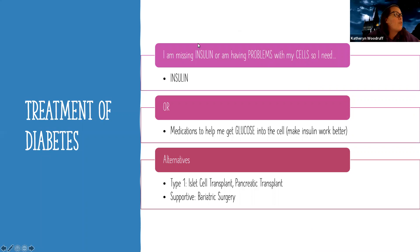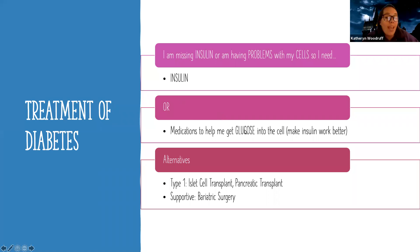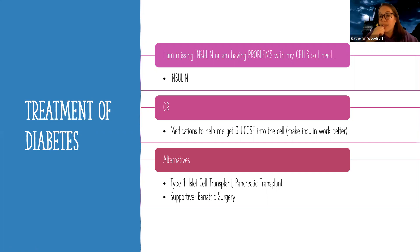For general treatment: type one diabetics are missing insulin, so we need to replace it with insulin. If we're having problems with the cells, we need insulin or medications to help get glucose into the cell or make insulin work better. It's like that telemarketer knocking on the door — after a while you're over it, you don't want anything they're selling. So they're going to need a new sales technique, and that's what some of these medications are.